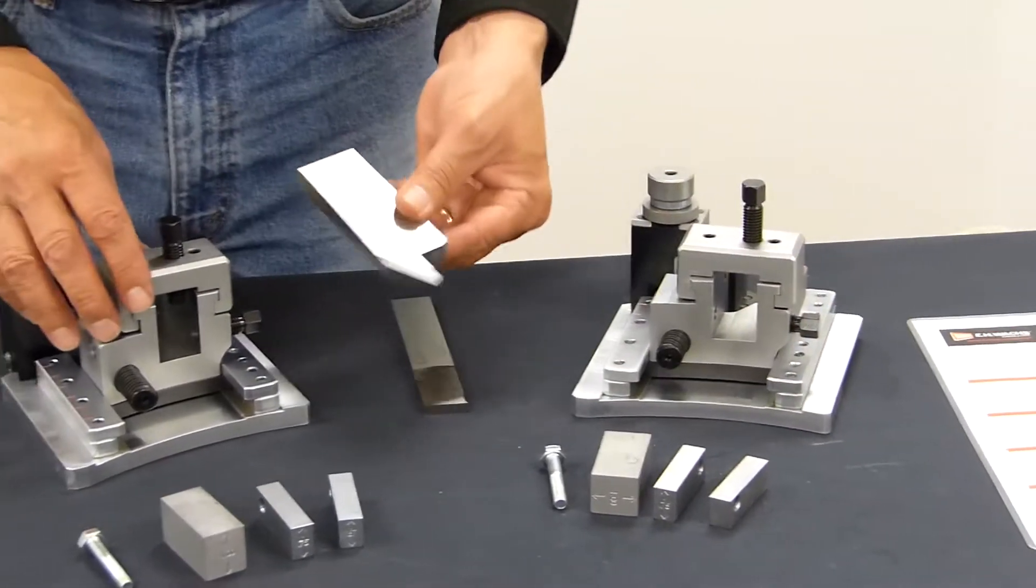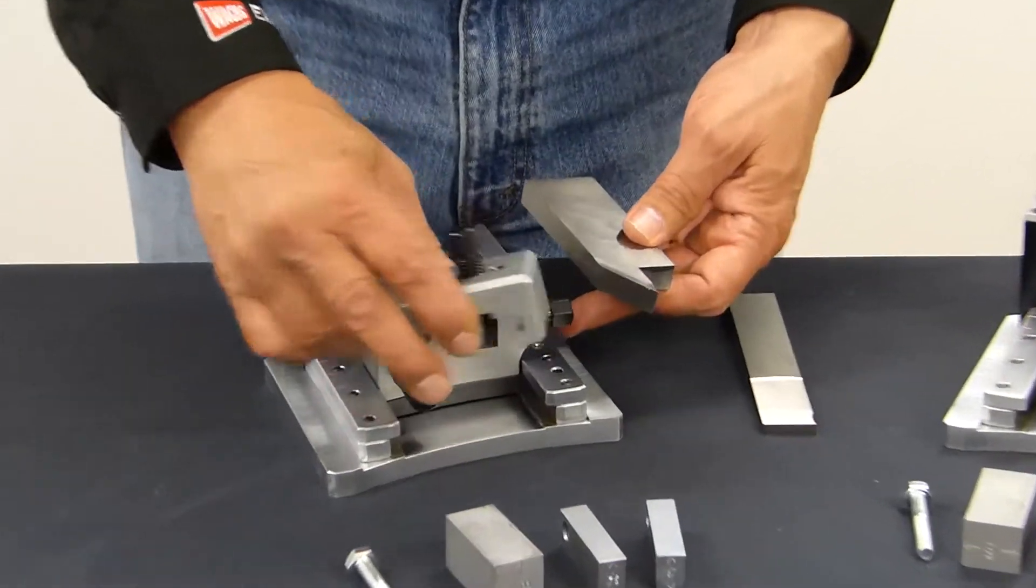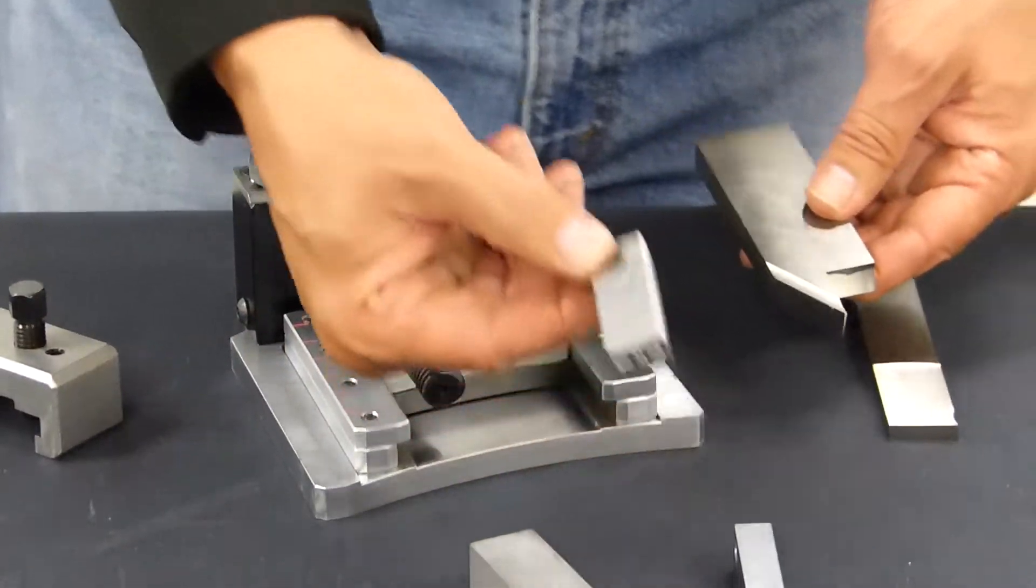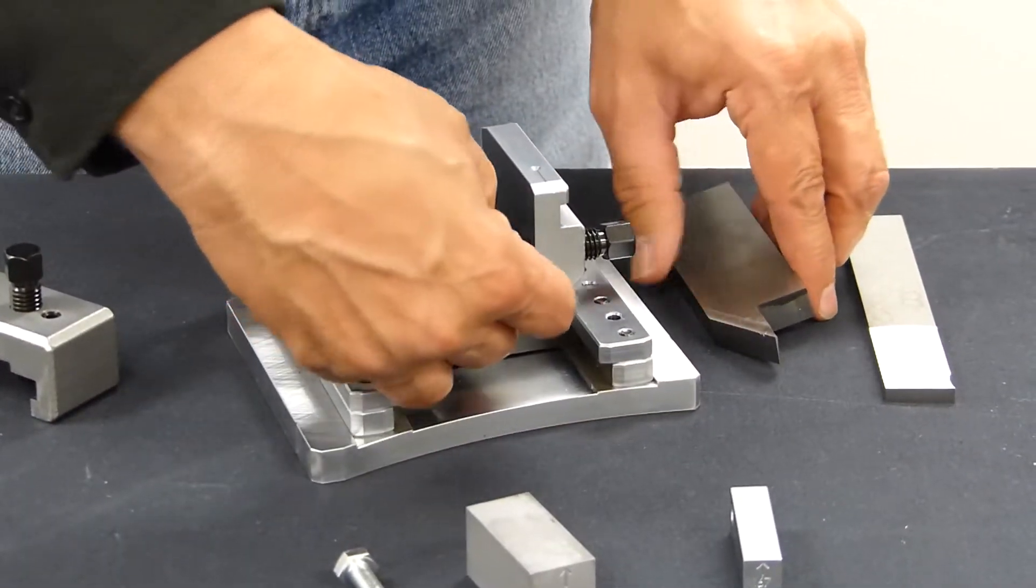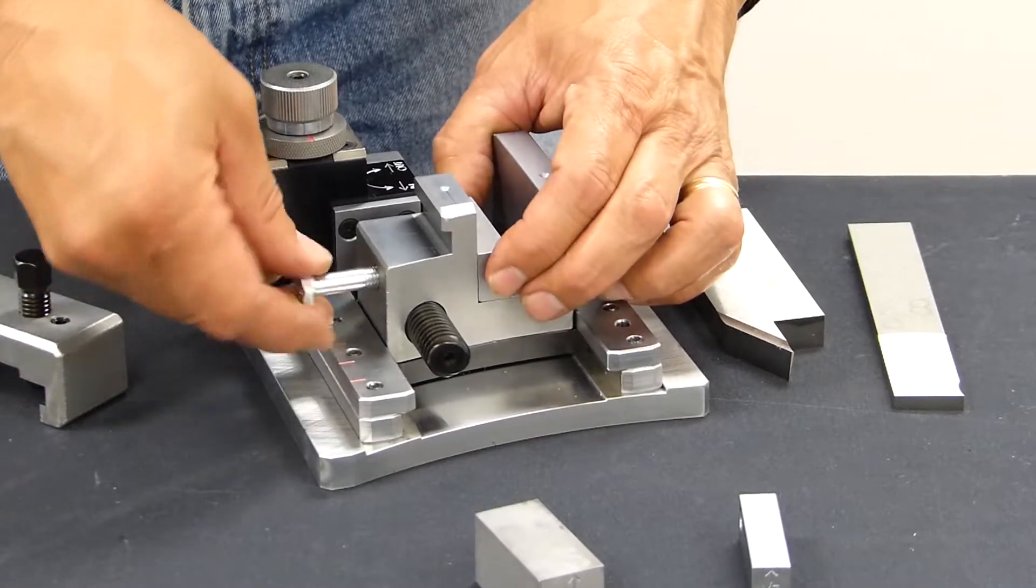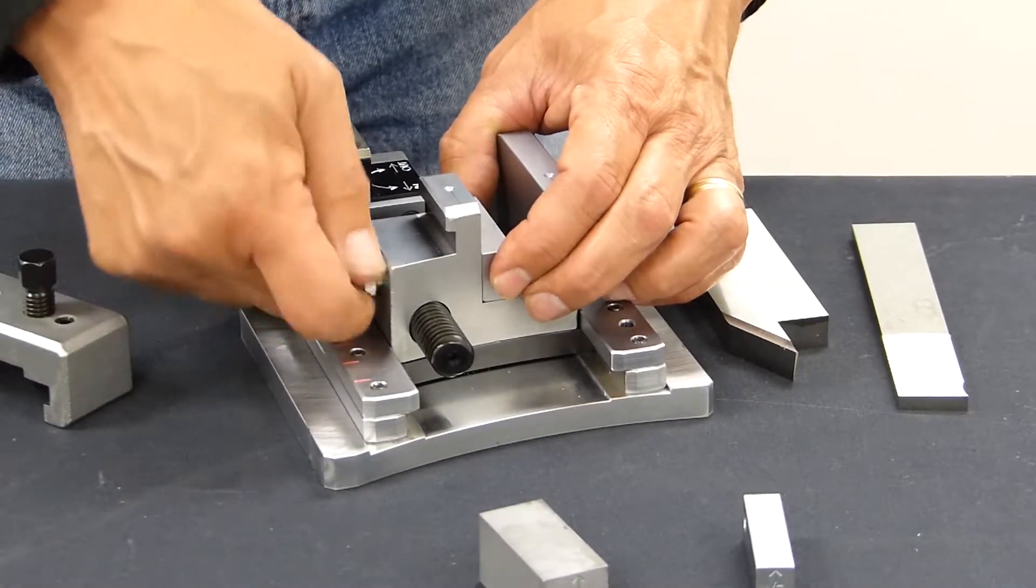We'll set our outside bevel tool up in this slide. Remove the cover. Use one of the smaller half inch spacers. Secure it with a locking screw.